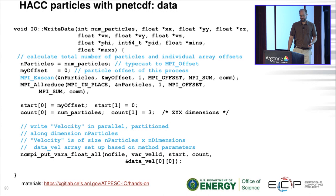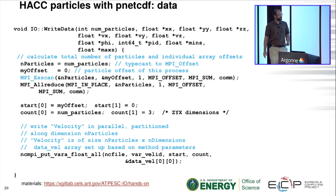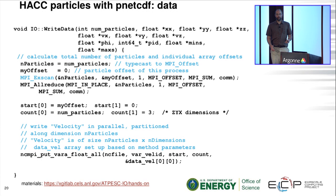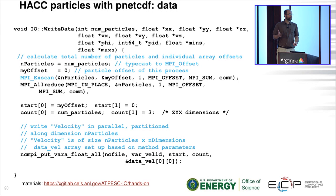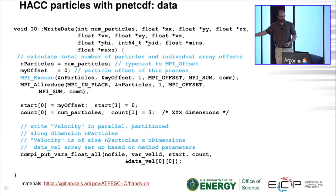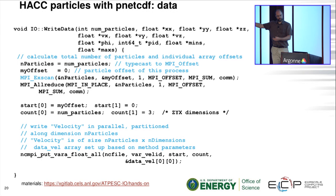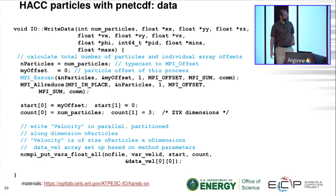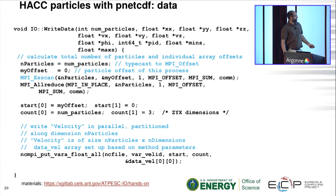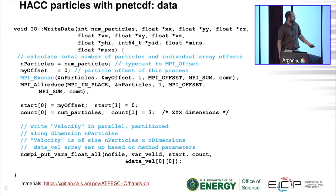In data mode for a particle code, the MPI_Exscan routine collectively figures out, for each rank, the cumulative sum of particle counts: rank zero gets its own count, rank one gets rank zero's count plus its own, and so on. This gives every process its starting offset into the particle table. With a variable identifier, a start, and a count, you can collectively write to that file.